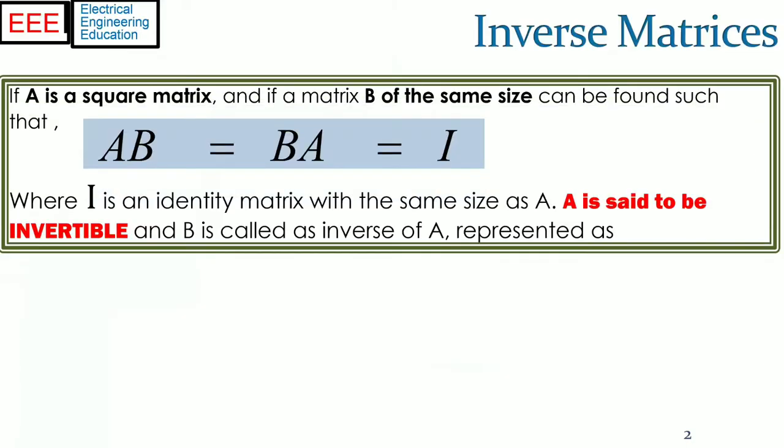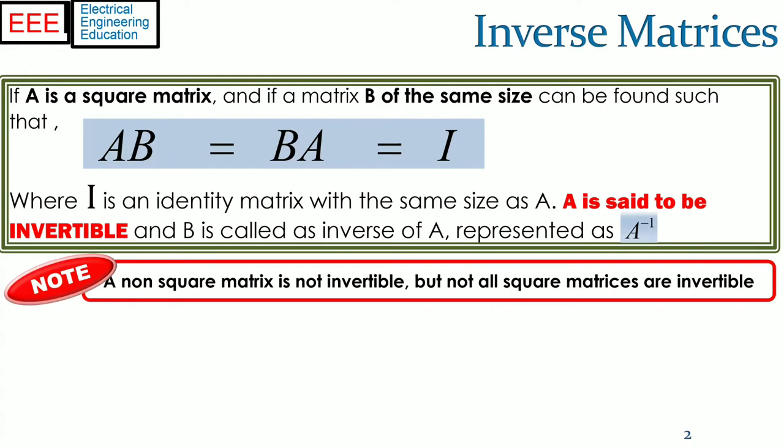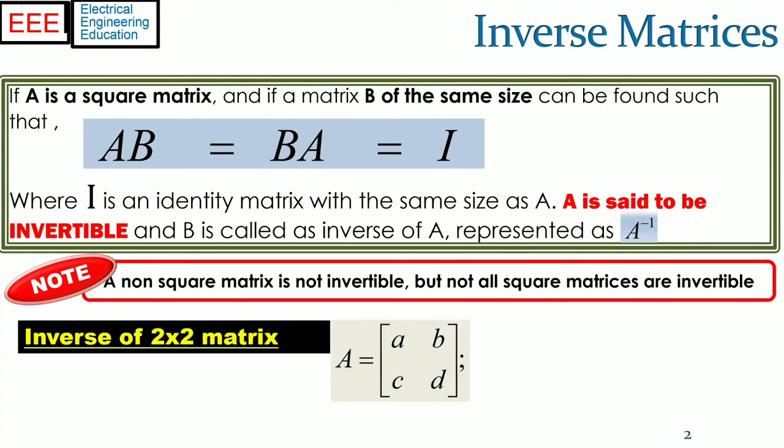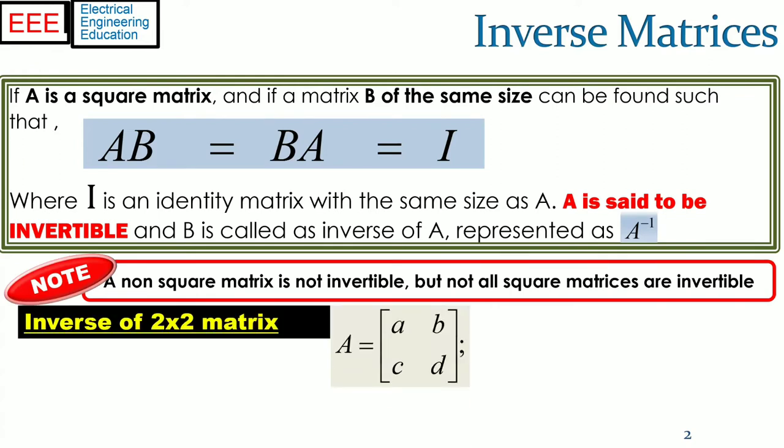If A is a square matrix, and if a matrix B of the same size can be found such that the matrix multiplication A into B is equal to B into A equals I, where I is the identity matrix having the same size as A, then A is said to be invertible and the matrix B is called the inverse of A, represented as A inverse. Note that a non-square matrix is not invertible, even if not all the square matrices are invertible.